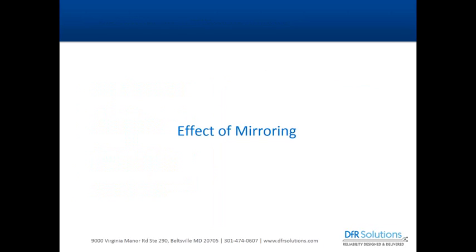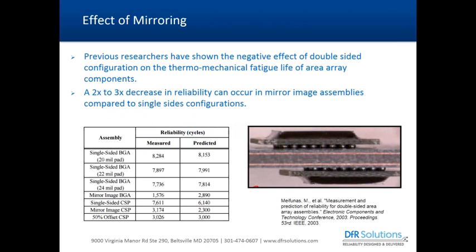To summarize so far: we talked about the effect of glass tile and PCB, axial and shear loads, and the effect of improper conformal coating. Now we add another system level effect: mirroring — physical and mechanical constraining of solder joints to printed circuit boards. A study by Mayfunas in 2003 performed thermomechanical cycling on mirrored ball grid array packages, showing a 2 to 3x decrease in fatigue life compared to single-sided components.